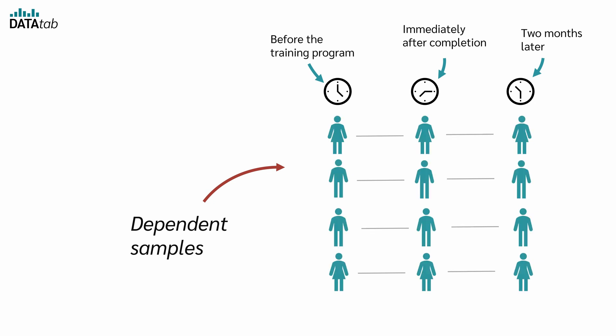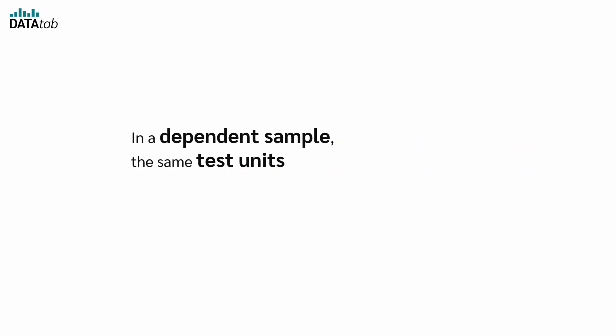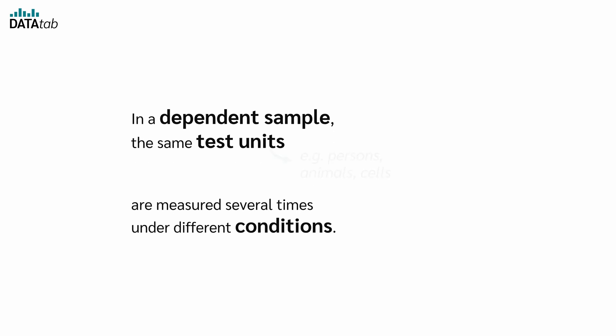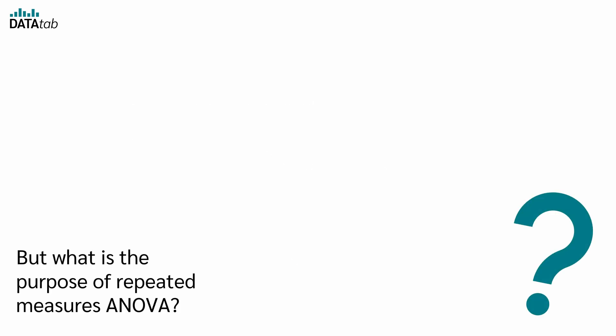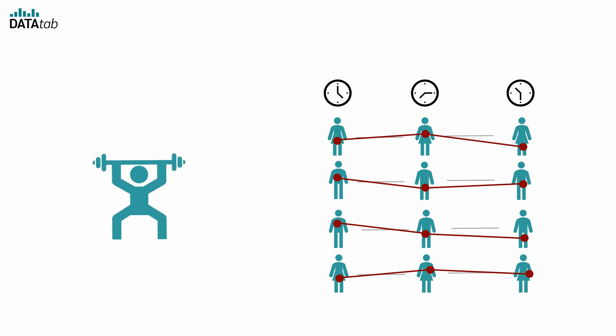In a generalized way, in a dependent sample, the same test units are measured several times under different conditions. The test units can be people, animals, or cells, and the conditions can be time points or treatments. We want to know whether the fitness program has an influence on physical fitness, and it is precisely this question that we can answer with a repeated measures ANOVA. Physical fitness is therefore our dependent variable, and time is our independent variable, with time points as levels. The ANOVA checks whether there is a significant difference between the different time points.